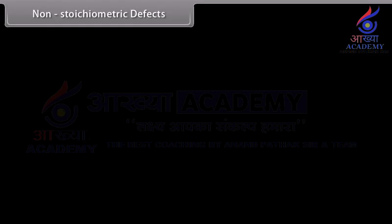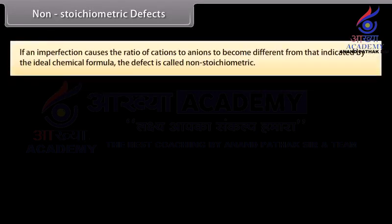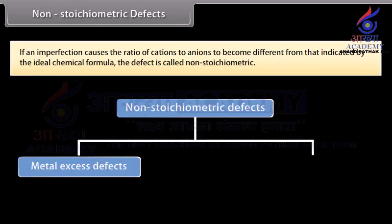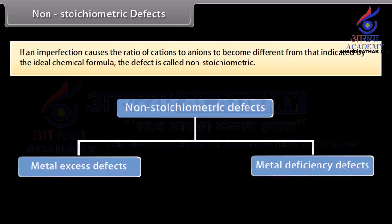Non-stoichiometric defects: If an imperfection causes the ratio of cations to anions to become different from that indicated by the ideal chemical formula, the defect is called non-stoichiometric. These are of two types: metal excess and metal deficiency.